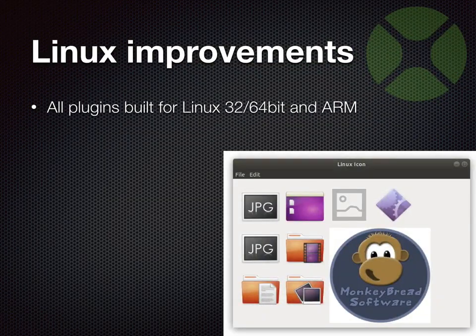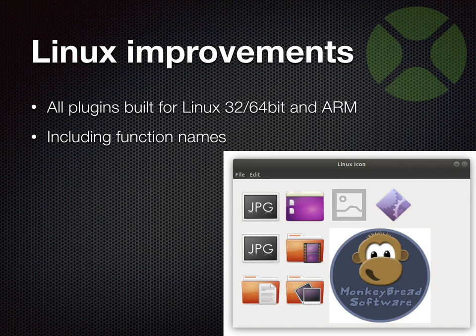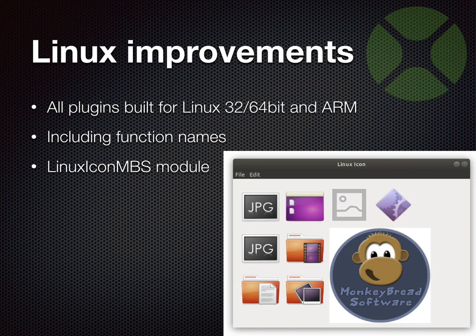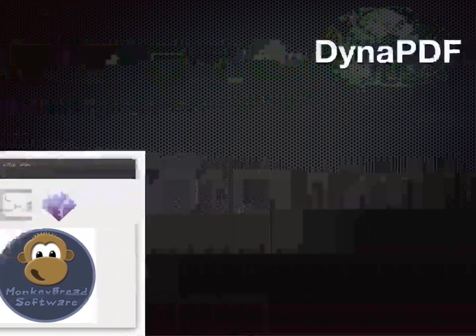We have improvements for Linux. All our plugins are built for Linux — that's a lot of work to just keep them building, even if many functions are just for Mac or Windows and do nothing on Linux. We still need the Linux counterparts to make sure you can build your application for all platforms. We now include function names in the binaries, which helps a lot for debugging. We also got an icon module where you can query icons for application files, query individual file-type-specific icons like JPEG, query special folder icons, and query previews for picture files with the system.